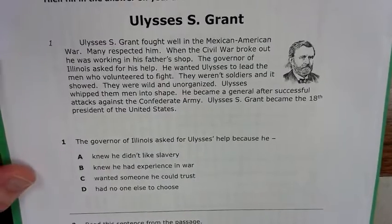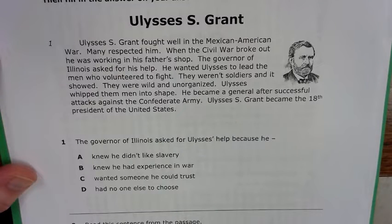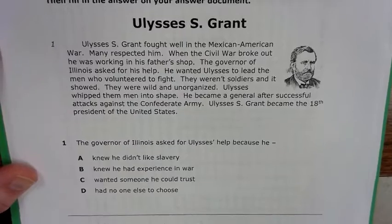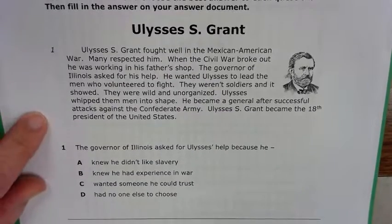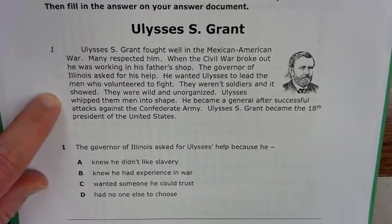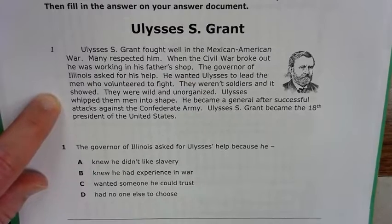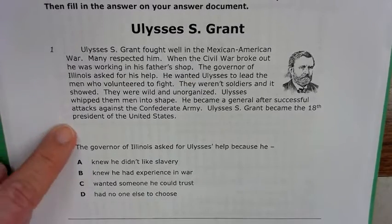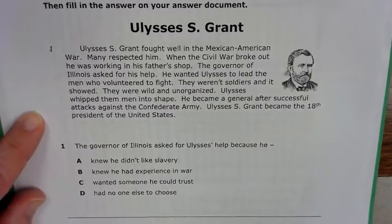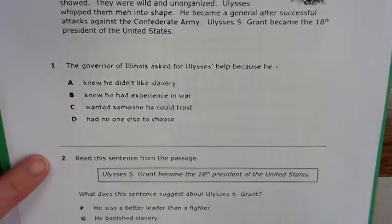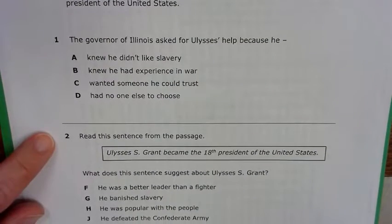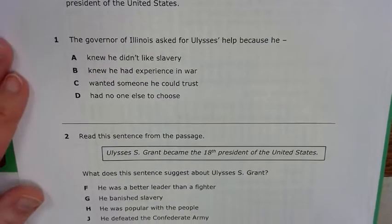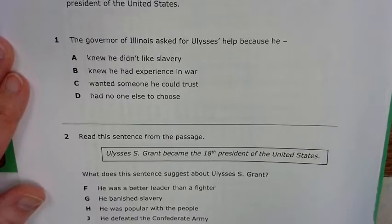The final essential standard is making inferences and using evidence to support understanding. This is a non-fiction piece about Ulysses S. Grant, who was the 18th president of the United States. There are two questions here where you'll use inference skills and evidence from the passage.